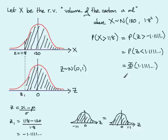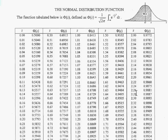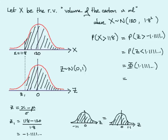All we need to do now is look in the tables for 1.111. The closest value available gives Φ(1.11) = 0.8665, which is the probability represented by that area. So Φ(1.1111...) = 0.8655, and that brings us to the end of this problem.